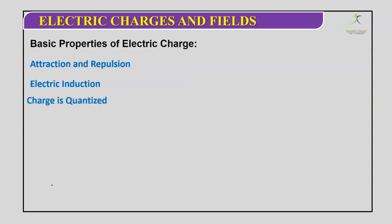The next property: charges are quantized. This means we can transfer charges only in whole multiples of electrons. We can say q = ±ne, where n = 1, 2, 3, and so on, and e is the charge of the electron in Coulombs.